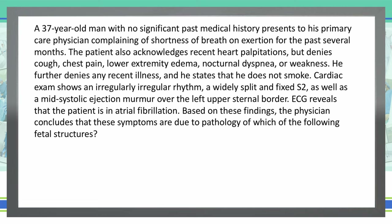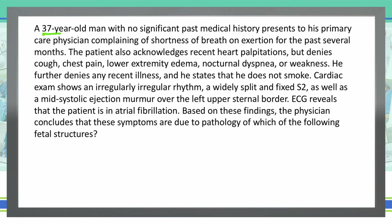The first thing we want to do is figure out what the most important things to take away from this question are before we look at our answer choices. We have a 37-year-old man having shortness of breath on exertion. Of note, he has heart palpitations, which correspond to the irregularly irregular rhythm. He also has a split and fixed S2, as well as a mid-systolic ejection murmur. He is in atrial fibrillation, which is exactly what this irregularly irregular rhythm tells us.